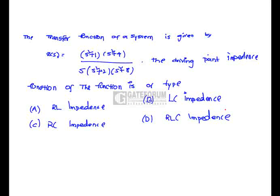The driving point impedance function Z(s) is given as a ratio of two polynomials whose numerator and denominator degrees differ by 1. Hence it is an LC impedance function. Drawing the pole-zero plot, the poles and zeros are interlaced alternately on the jω axis, confirming it is an LC impedance function. Option B is correct.